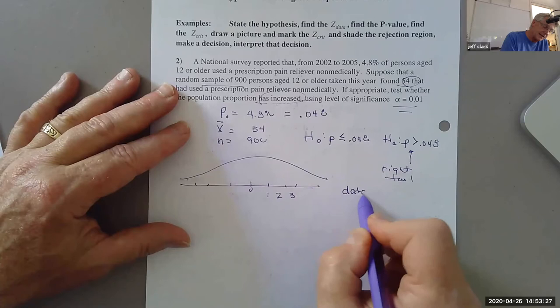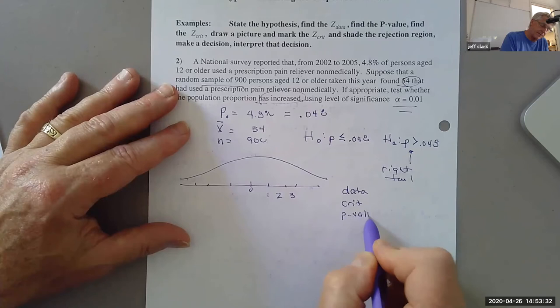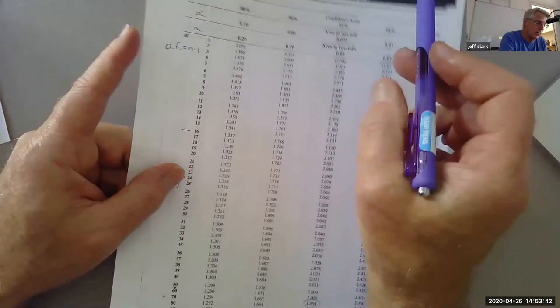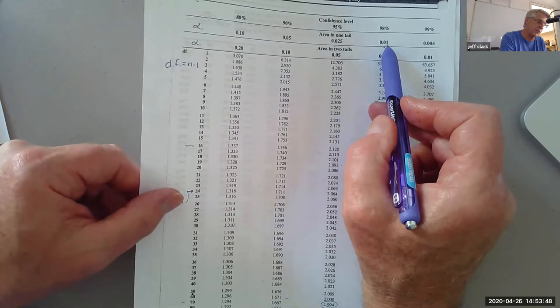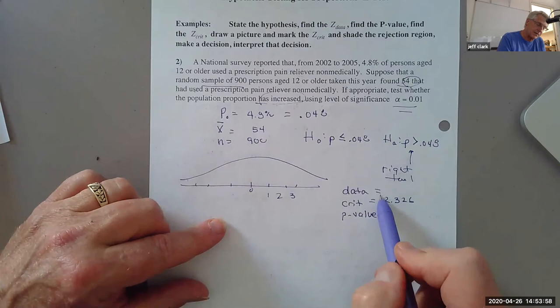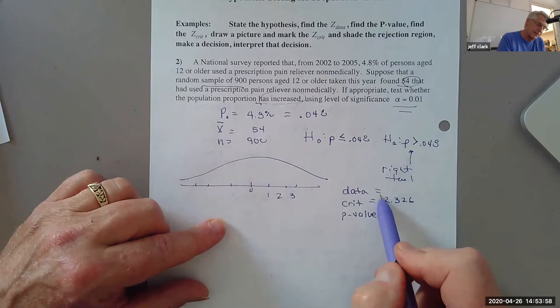We need a data. We need a crit. We need a P value. Okay. The crit comes from the table. It's an alpha and a one tail, 0.01, one tail, 0.01 is right here. And we're going to go, since it's a Z that we're looking for, for proportions, we go all the way down at the bottom and I see 2.326, 2.326. And because it's a right tail, it's positive. This is your crit. You shade to the right.